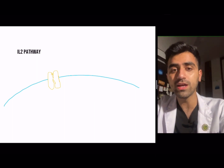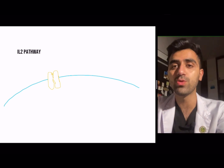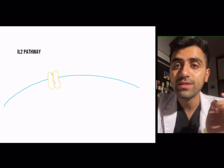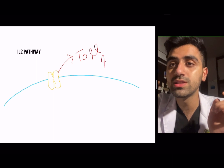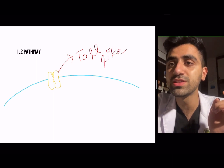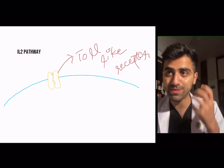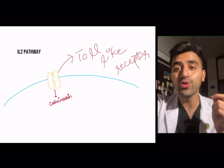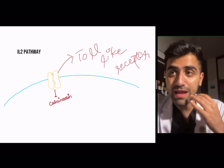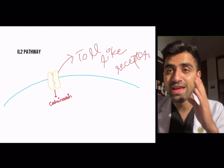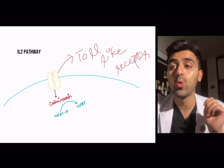Something comes in and activates a receptor — this is the Toll-like receptor, usually present on the surface of macrophages. The Toll-like receptor activates calcineurin. Anything that can cause inflammation activates this receptor.